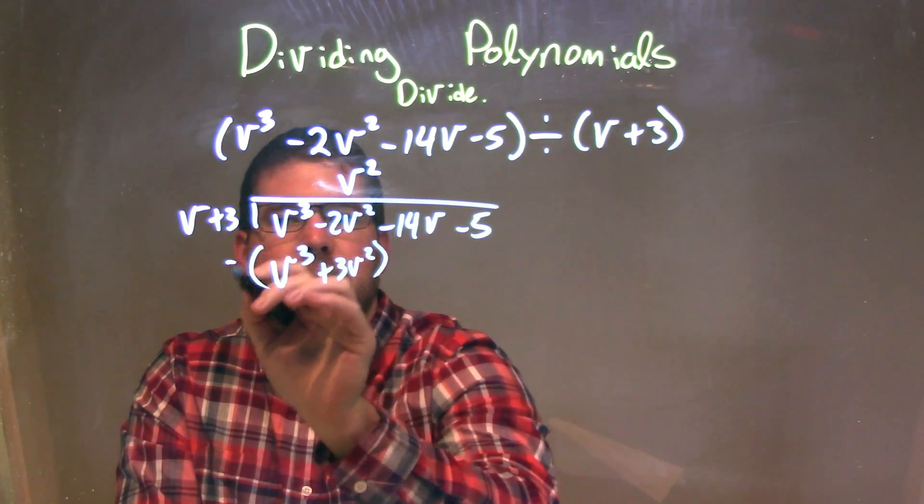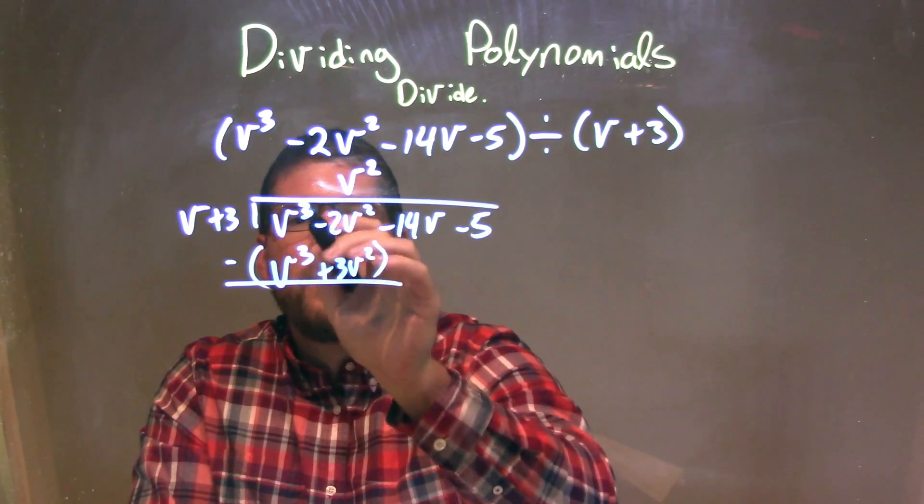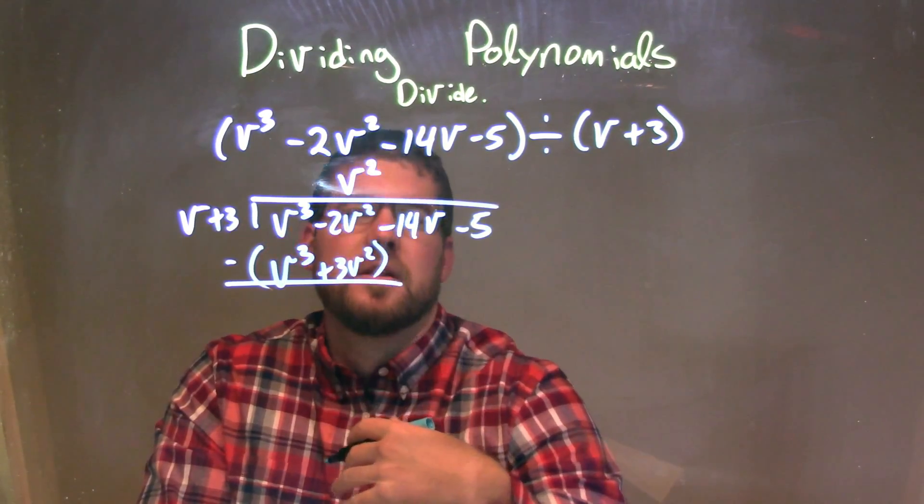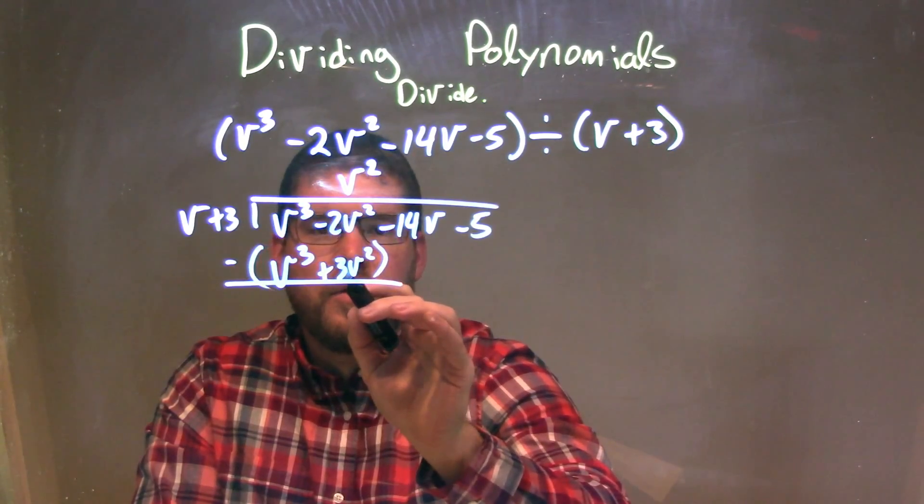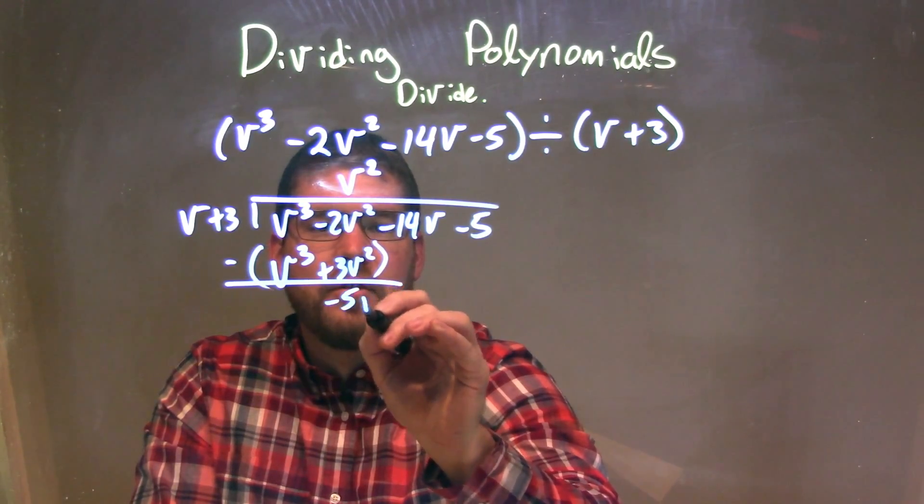Let me subtract the two. Okay, v³ minus v³ is 0, should eliminate, that's great. -2v² - 3v² is -5v². Okay.